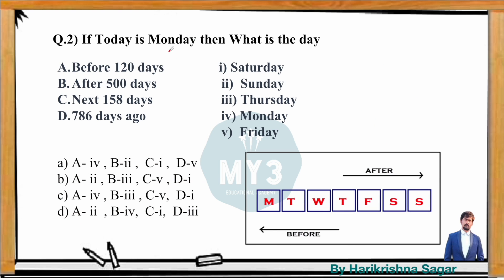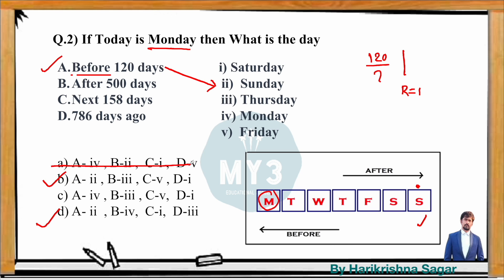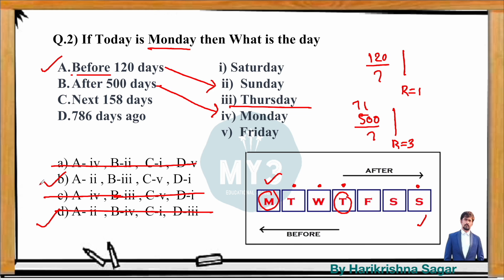Let's look at one more question. If today is Monday, what was the day before 120 days, and what will it be after 500 days? For before 120 days: 120 divided by 7 gives remainder 1. 'Before' means past, so go back by 1 day from Monday — the answer is Sunday. This eliminates options A and C. For after 500 days: 500 divided by 7 gives remainder 3. Move forward 3 days from Monday — 1, 2, 3 — the answer is Thursday, which corresponds to option 3. So B matches with 3.